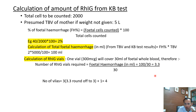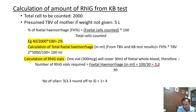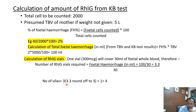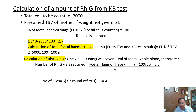You get a decimal value such as 3.3. Round it off — if it is 3.3, round down to 3; if it is 3.6, round up to 4. Once rounded, always add one extra vial. Why? Because the KB test is not fully accurate and you want to over-cover. So 3 becomes 4, and 4 becomes 5.